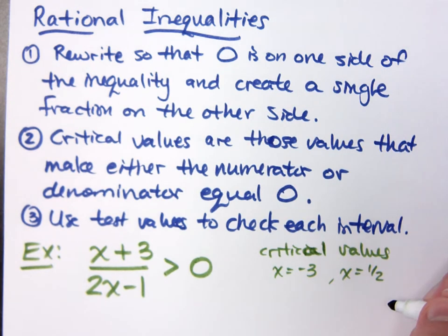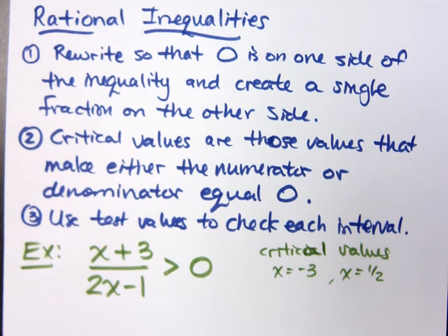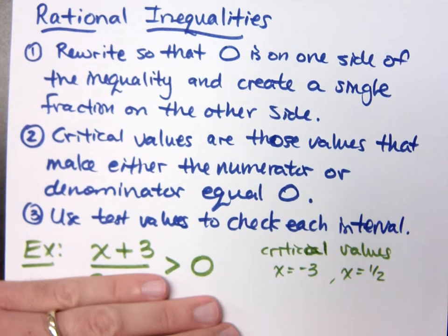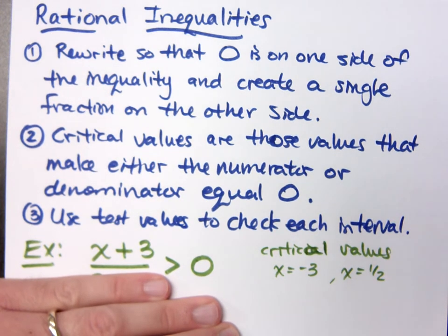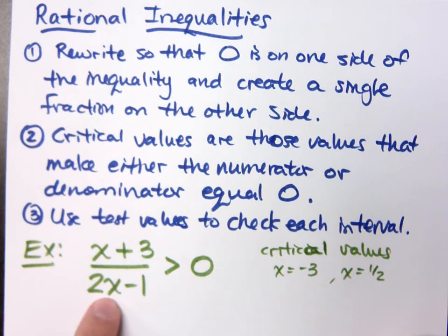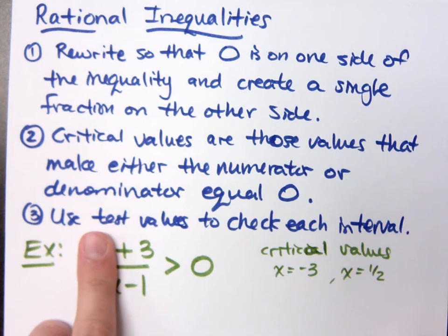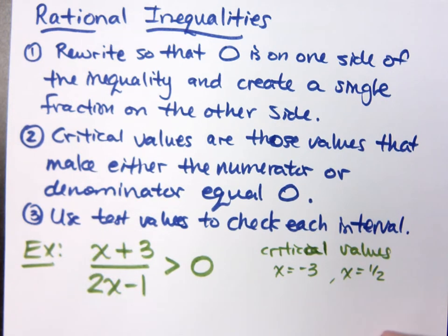Don't you have to use something that would make it zero? Right — if I plug in negative 3 in the numerator, that numerator becomes zero. But if I plug in 0 for x, I get negative 3 in the numerator, not zero. So x equals 0 is not a gatekeeper because it doesn't make the numerator or denominator equal to zero.